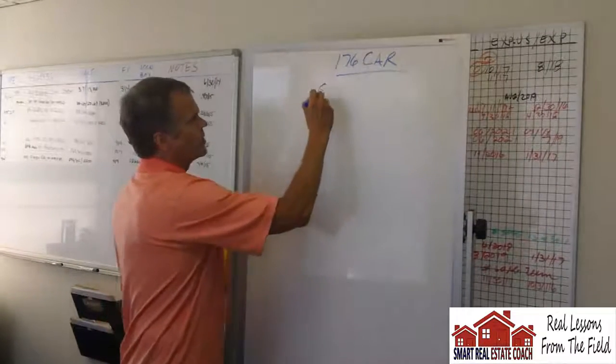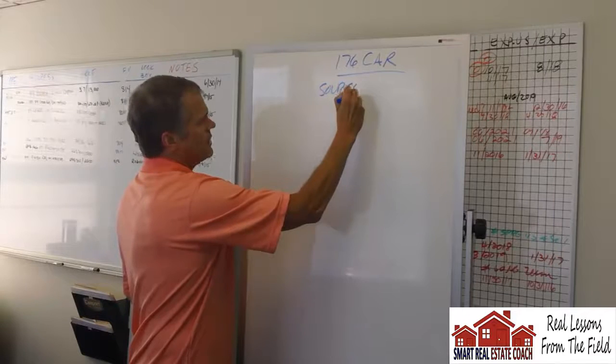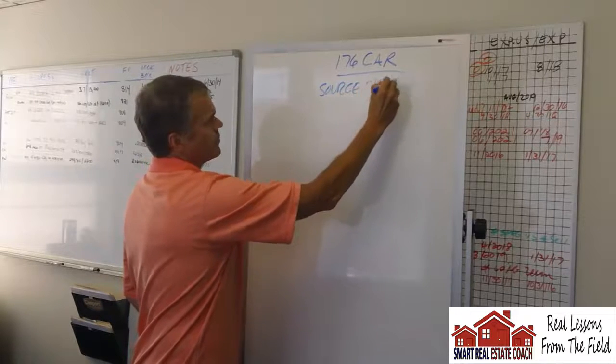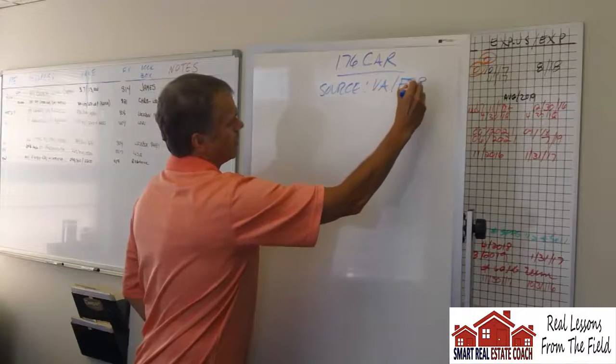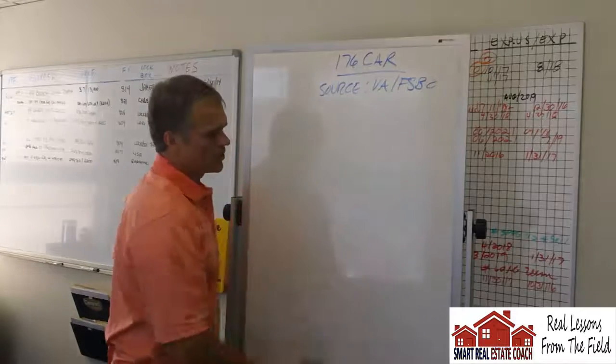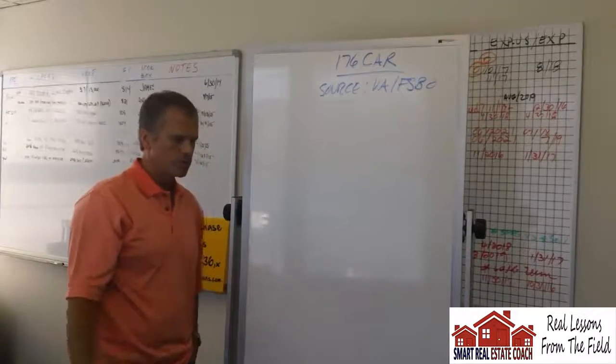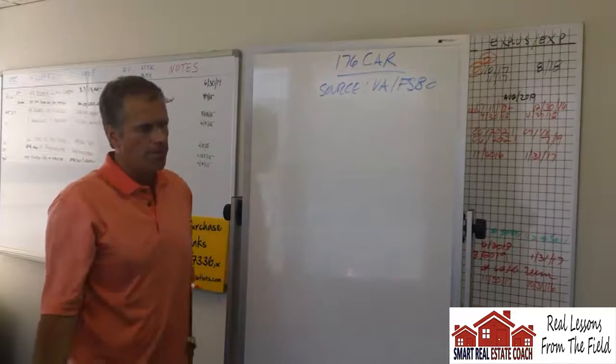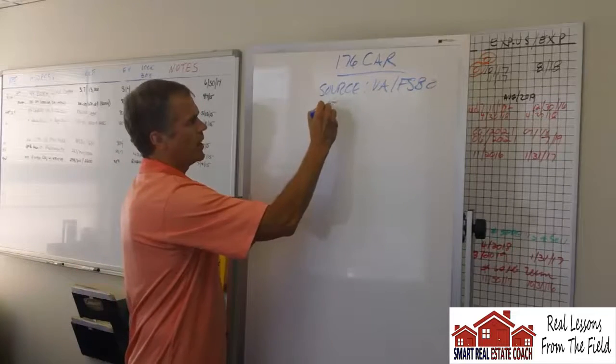Source was a VA lead from a FISBO. Ended up being that the home was, someone passed away and the home was in an estate and the son was dealing with it.